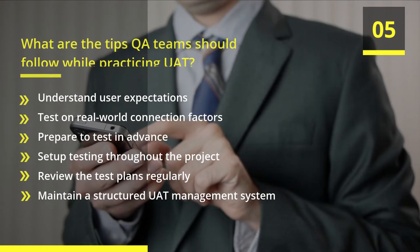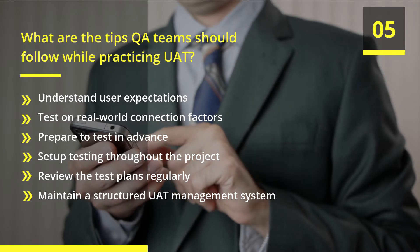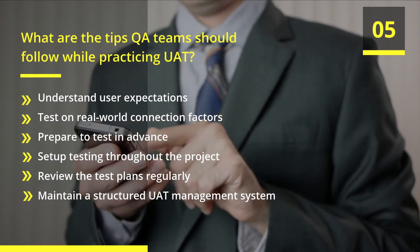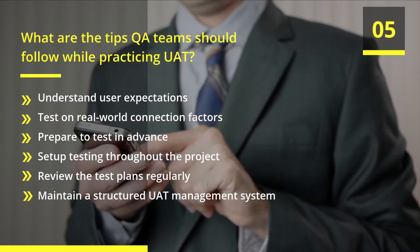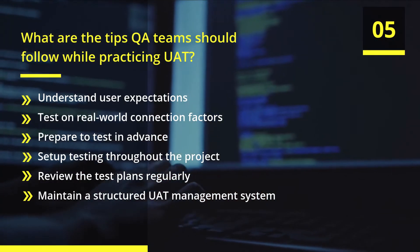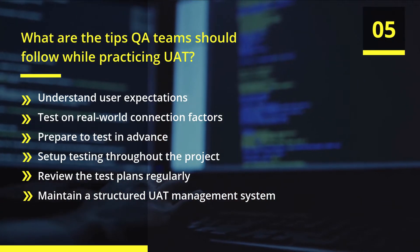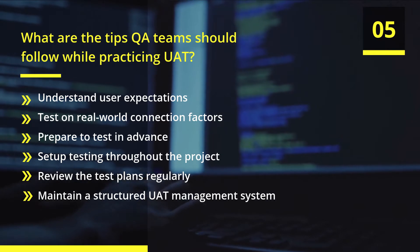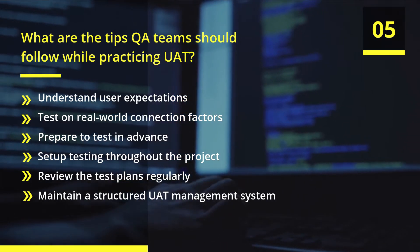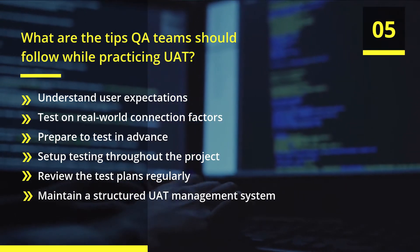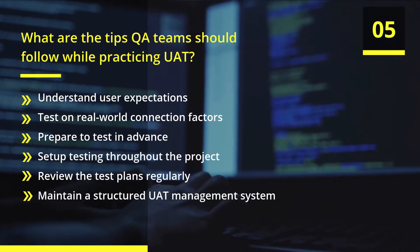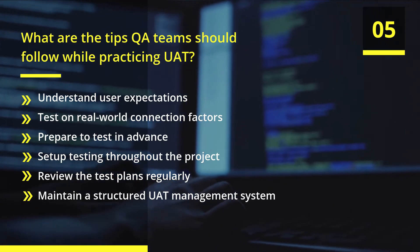What are the tips QA teams should follow while practicing user acceptance testing? First, understand user expectations. Second, test on real-world connection factors. Third, prepare to test in advance. Fourth, set up testing throughout the project. Fifth, review the test plans regularly.